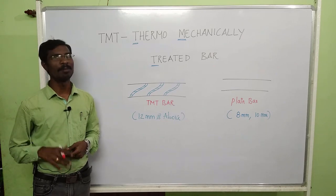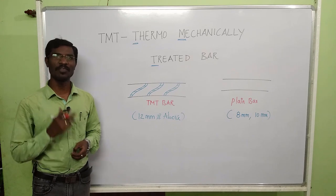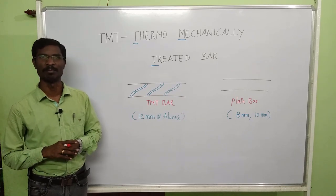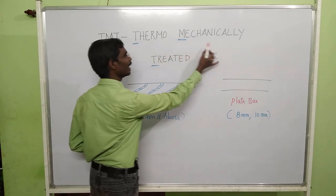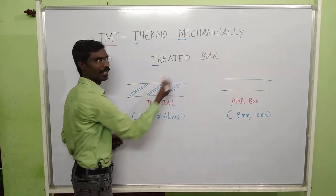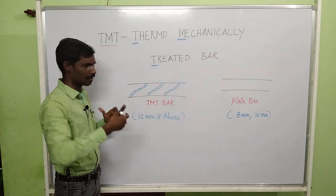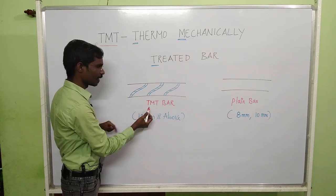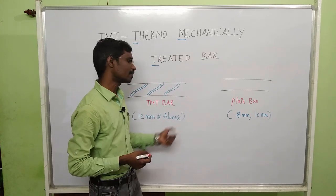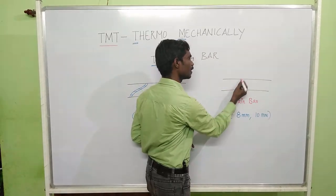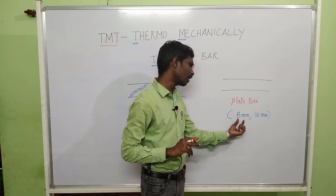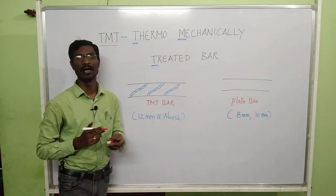Usually we call TMT bar, but many don't know what TMT stands for. TMT denotes Thermo-Mechanically Treated bar — T denotes thermo-mechanically, M denotes mechanically, and T denotes treated bar. These bars are twisted bars, and are available in 12mm and above. The other type is plain bar, which has no twisted shape and is available in 8mm and 10mm. There is no TMT bar for 8mm and 10mm.